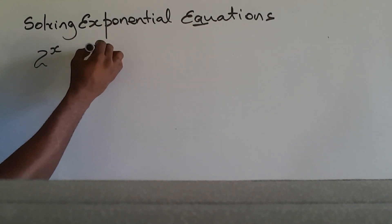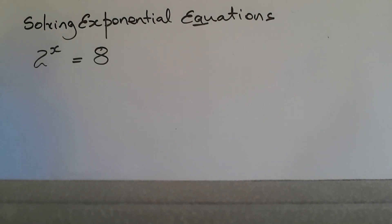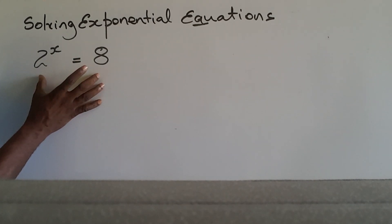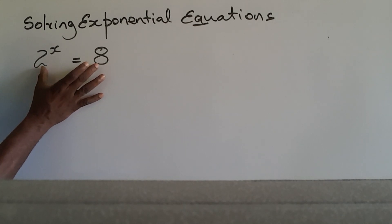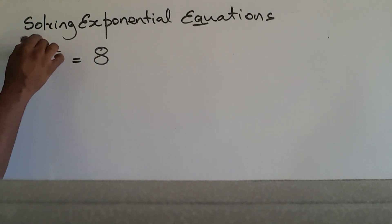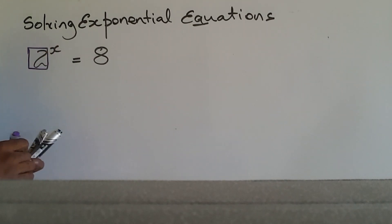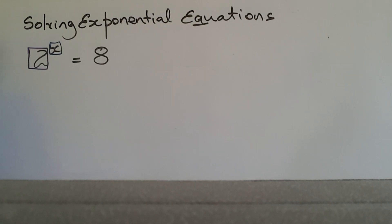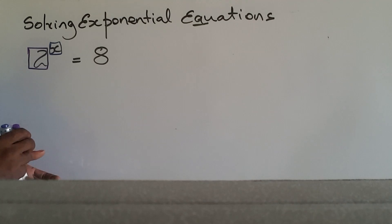When solving exponential equations, we have to make an effort to ensure that both sides of the equation are written in the same base. When we say base, we're referring to this number here — this is the base, and X is the exponent. It is our duty to make sure both sides are written in the same base.